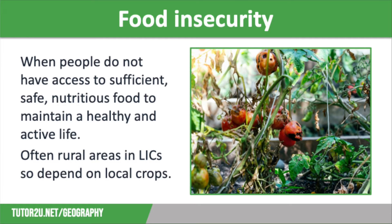Many people in LICs suffer from food insecurity, where they do not have access to sufficient, safe, nutritious food to maintain a healthy and active life. These populations tend to be rural, meaning that they do not have access to shops to buy food, so they have to grow what they eat or depend on small village markets buying locally grown produce. Food supply in these areas is often affected by drought and desertification, pests and diseases, conflict, and a lack of technology.